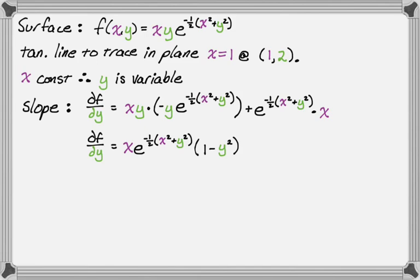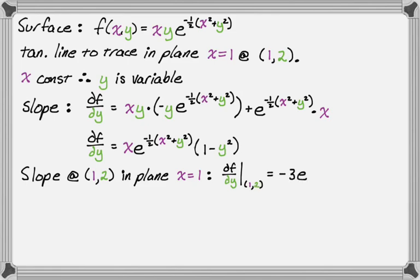Okay, so that's our partial y, and now what we need to do is find the slope at the point (1,2) in the plane x equals one. So that's what we're doing. That's going to be the value of partial y at this point. So notationally, that's going to be partial y evaluated at (1,2). And then when you substitute that in, you get negative 3e to the negative five-halves. Okay, so that's our slope.